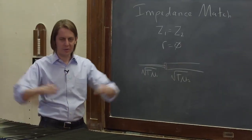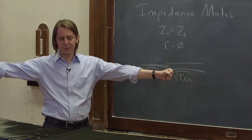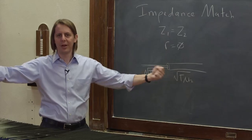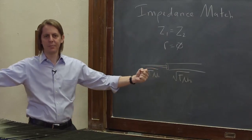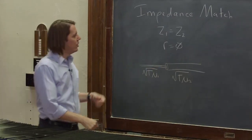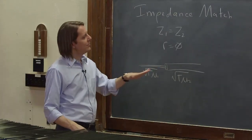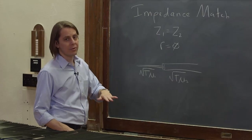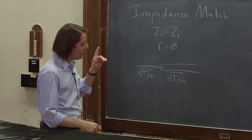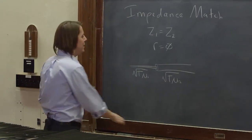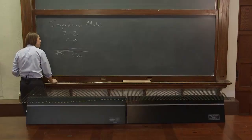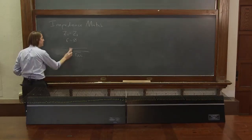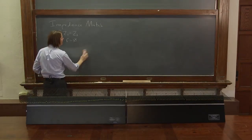You can't get them equal because the mu's are different and they have to have the same tension. You tie two elastic strings together and pull them — they're going to have the same tension. So you can't impedance match with the string.